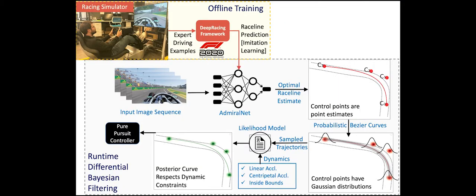At runtime, a sequence of images from the game are fed into our pre-trained network called AdmiralNet, which generates a local optimal race line estimate for the race car to follow.